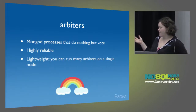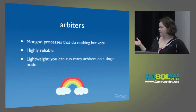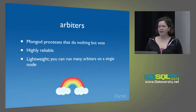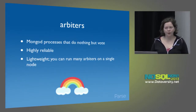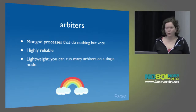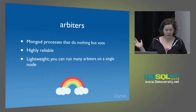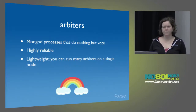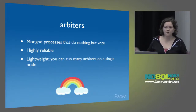Money is a good reason to use an arbiter instead of a third node. We use M2.4xlarge instances for our Mongo nodes, which have 68 gigs of RAM. For our medium clusters, we literally toss a dozen arbiters on a single M1.medium. They take almost no resources, and they really help a lot.